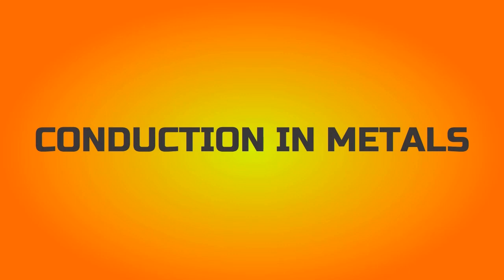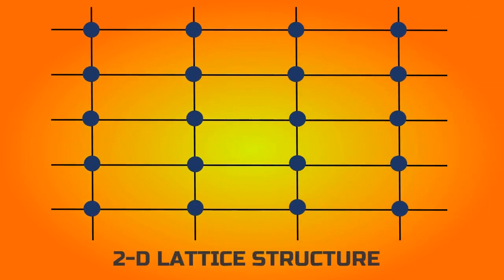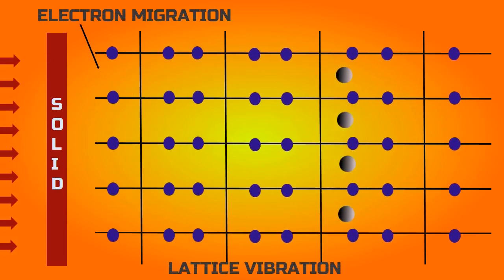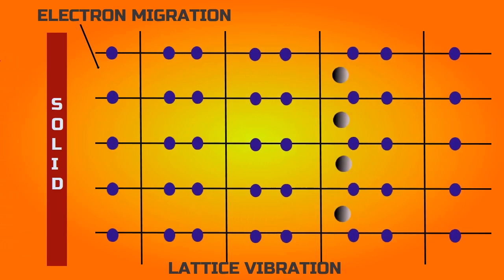Now we will see how conduction takes place in metals. What you see here is a 2D lattice structure of a material. In metals, conduction takes place by lattice vibration and electrons. When heat is supplied to a metal, its lattice structure starts to vibrate about its original position and transfers the heat energy.